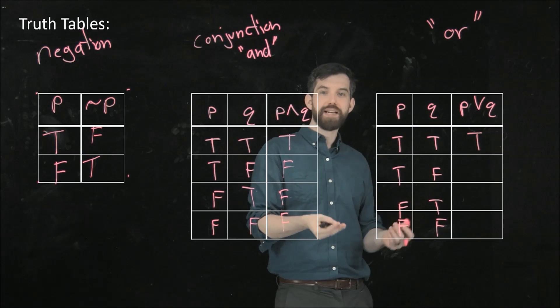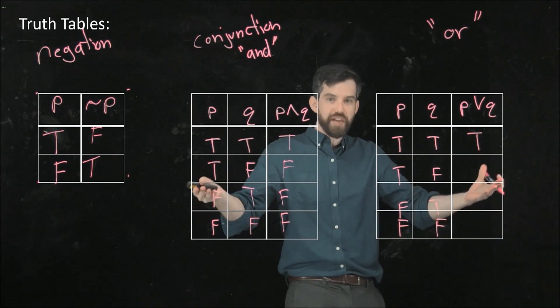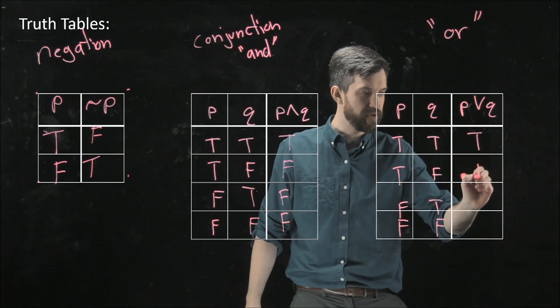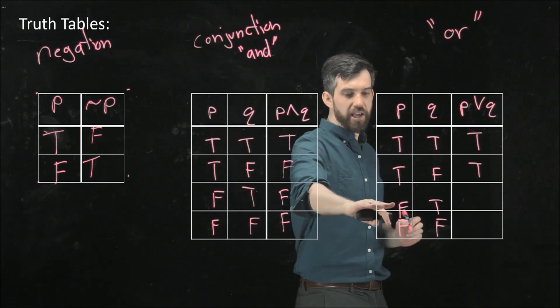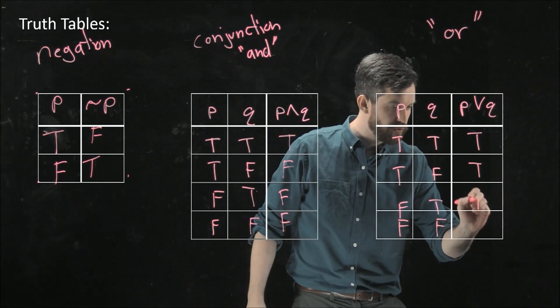In the second scenario, one of them is true, one of them is false. But if the statement is one thing or the other, well, one of them is true, so that's going to be true. Here, false and true, well, one of them is true, so it's going to be true again.